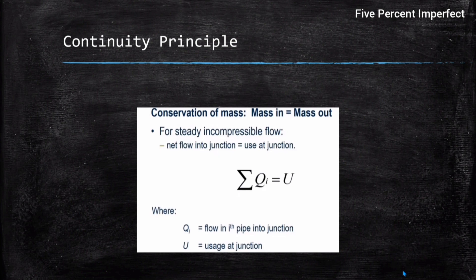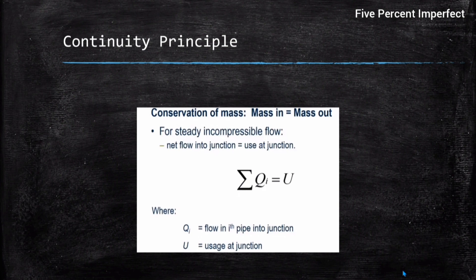The first equation used in WaterGEMS is the continuity principle. It simply states that at any given junction the total quantity of water coming in equals the total quantity used, assuming zero losses and no inflow from outside the network. This can be written as: the sum of flow in the i-th pipe (Qi) equals the usage at the junction (U), based on the law of conservation of mass.